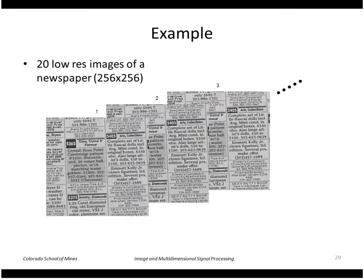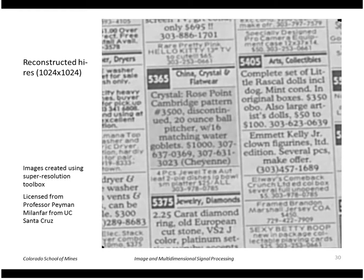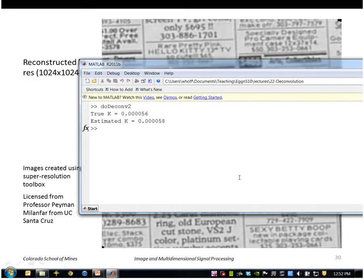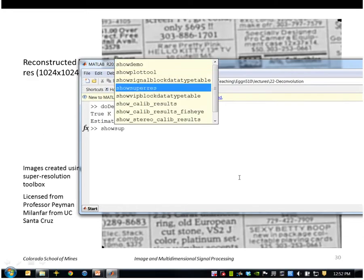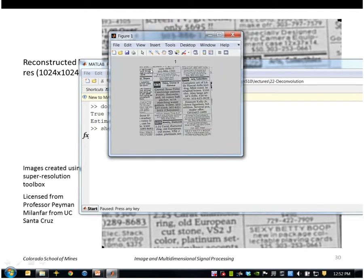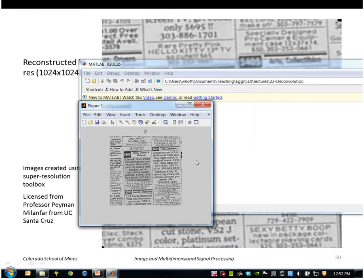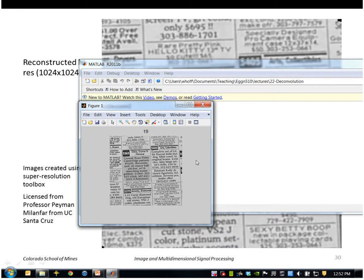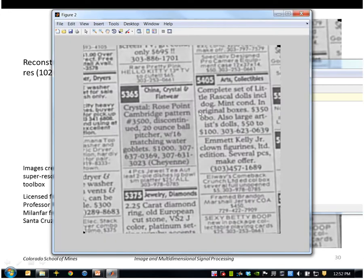I ran this code on some images I took of a newspaper. Twenty low resolution images as you can see here, and this produced this higher resolution result. This one's 1024 by 1024. I started with 256 by 256. Let me just show you, it's hard to see these images but I'm going to show you the 20 original images. That's the first one, second, third, fourth. So as I step through it you can see the slight shifts from image to image. And then here is our high resolution result.